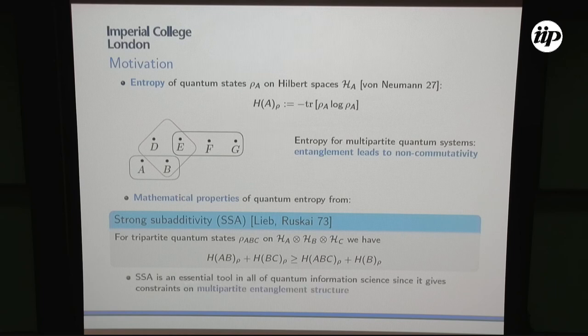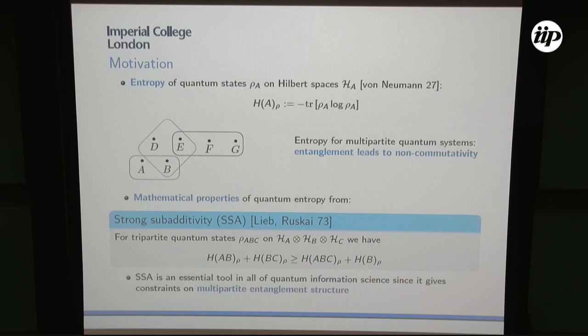This is a very non-trivial inequality to show, exactly because these different subsystems can be entangled, and then we have a non-commutativity of the reduced states. However, if we can show an entropy inequality to hold in the quantum setting as well, this will be a very useful tool — because it gives us bounds or constraints on the multipartite entanglement structure. It's hard to prove inequalities for quantum entropy, but if we have one, it's very useful.